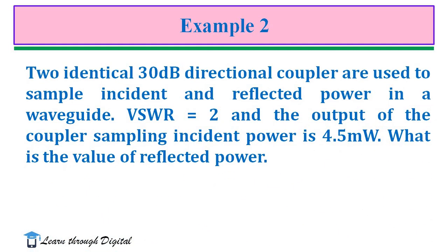In the second example, two identical 30 dB directional couplers are used to sample incident and reflected power in a waveguide. VSWR is equal to 2, and the output of the coupler sampling incident power is 4.5 mW. We need to find the value of reflected power. We know the VSWR, so from this we find the reflected power.